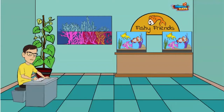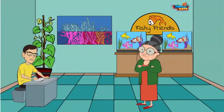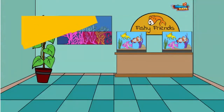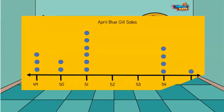Mrs. Kermogen wanted me to figure out how many bluegill fish we sold in the month of April. Gilbert, did you get my numbers for me yet? No, Mrs. C, but I am working on it. Speed it up, sonny boy. Okay, Mrs. Kermogen needs these numbers fast, so I am going to look at this dot plot I used to record the bluegill fish data.